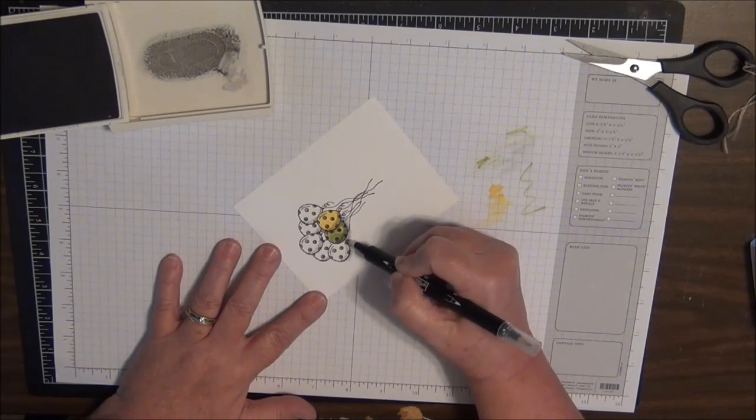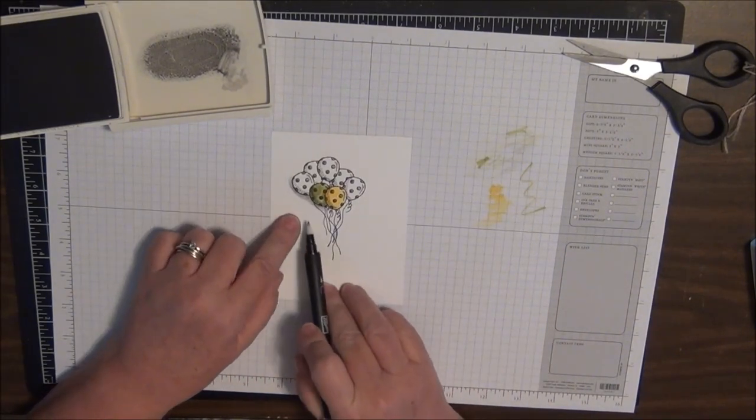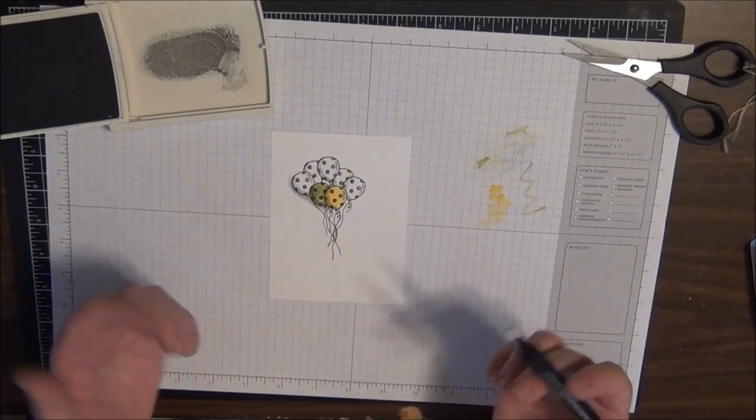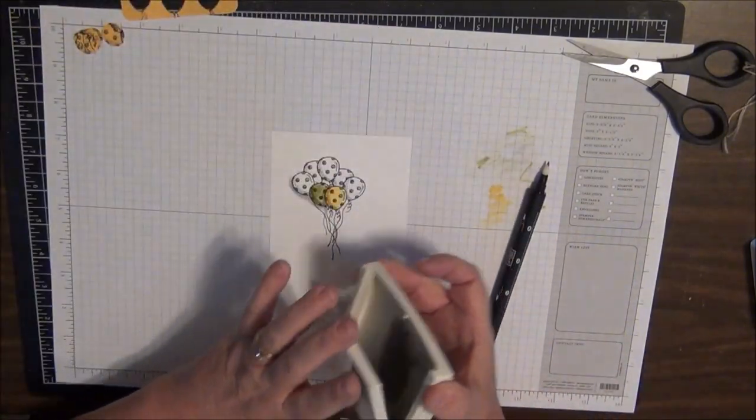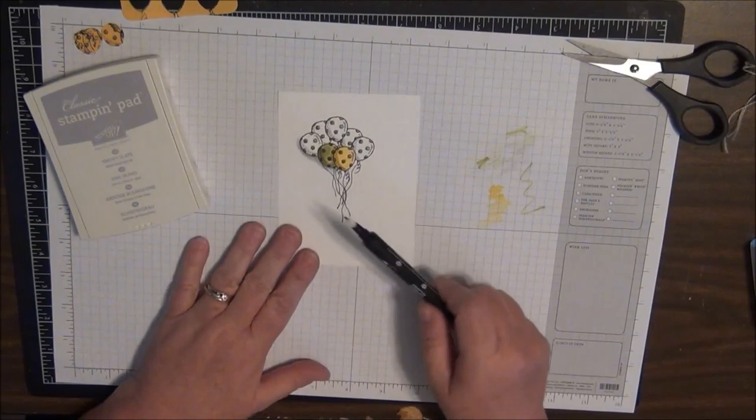Okay, and there it is. You can see, and it'll look much better when this image is colored, but it just kind of gives the shading underneath the balloon and makes the balloons pop like they're actually going through the air. So that is doing some masking and showing you how to watercolor with the blender pen and the ink pads.